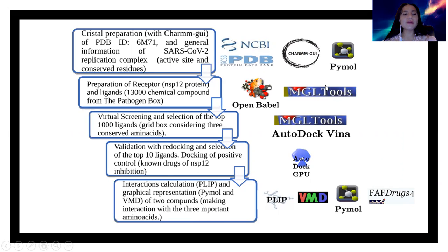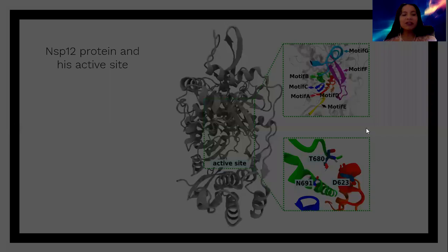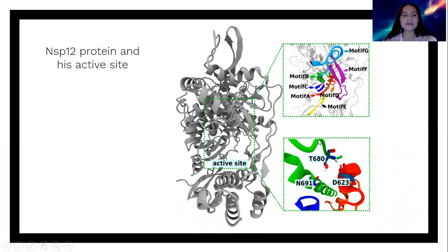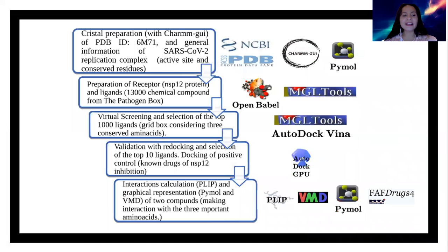For the virtual screening, we employed AutoDock Vina and made a grid box considering the three conserved amino acids essential for receptor catalysis. After this, we performed molecular docking for validation with AutoDock GPU.